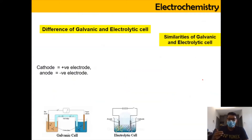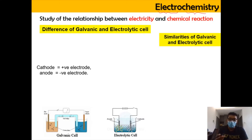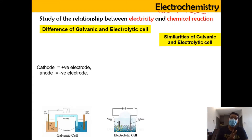Before we go any further, let's come back to what is meant by electrochemistry. 'Electro' means electric, meanwhile 'chemistry' means chemical reaction. So electrochemistry is basically a study of the relationship between electricity and chemical reaction. In electrochemistry we're going to look into two types of cell: galvanic cell and electrolytic cell.